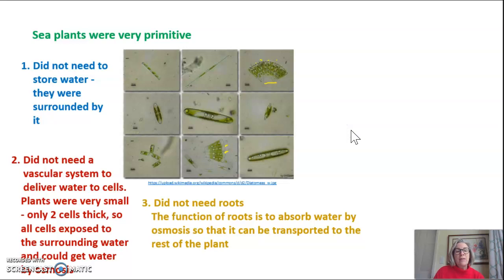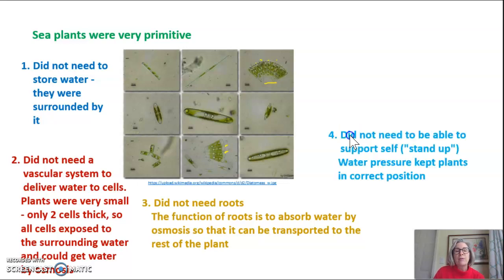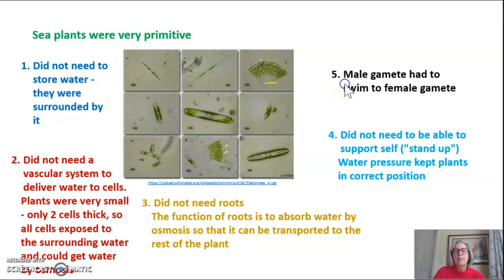These plants didn't need roots either. The function of roots in a land plant is to absorb water by osmosis so it can be transported to the rest of the plant, but these sea plants were so small they didn't need roots. They also didn't need to be able to stand up or support themselves — the water pressure alone kept them in the correct form and position. The last thing sea plants had to do was ensure the male gamete could swim to the female gamete.